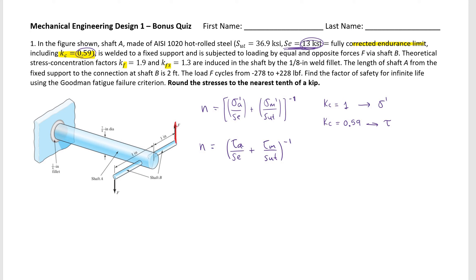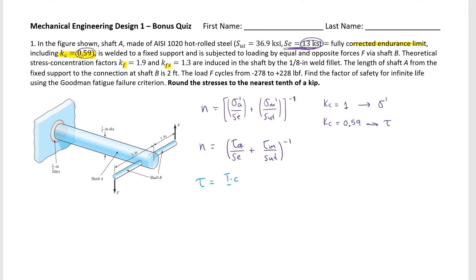Analyzing this: there are two forces F and F, so there's going to be a torque. There is no compression. This is not bending up or down because the two forces cancel out. So basically there's no bending, no compression, no tension — only shearing.